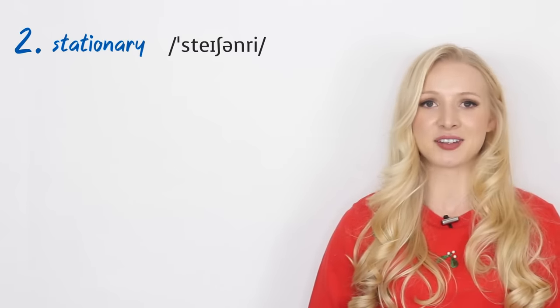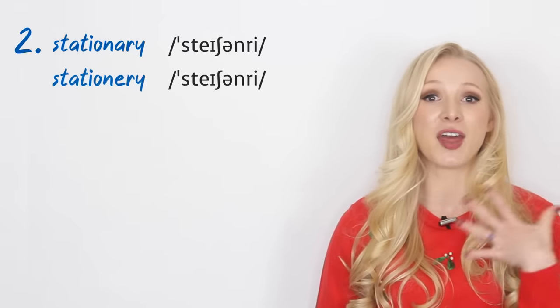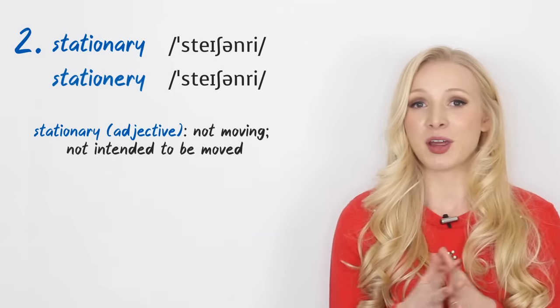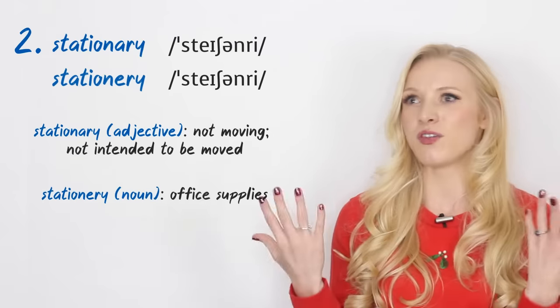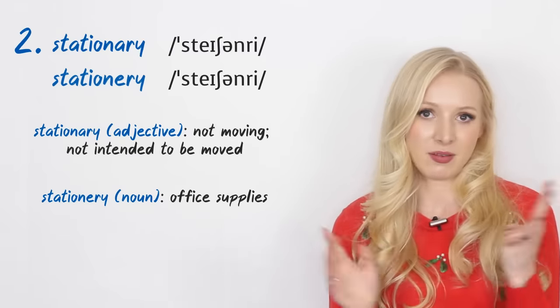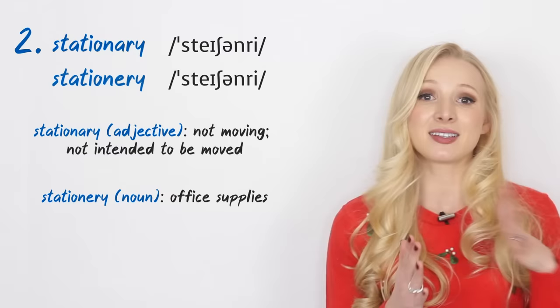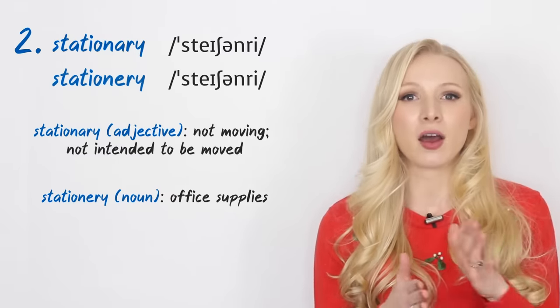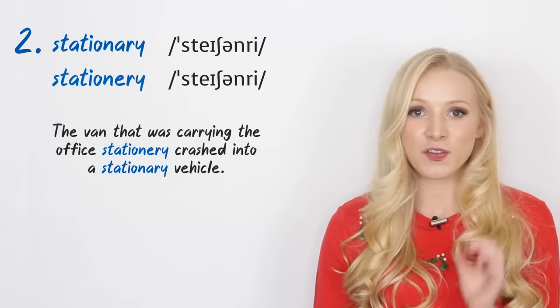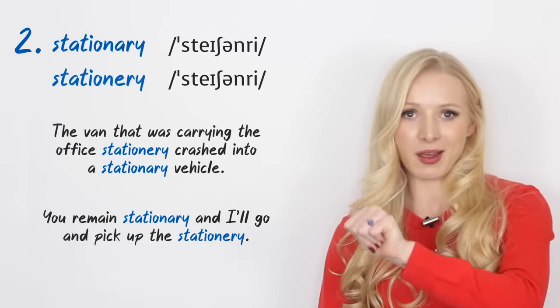Number two, we have stationary and stationary, both pronounced in the same way, but spelt differently. We have stationary with A-R-Y, which means to not be moving or not intended to be moved. And we have stationary with E-R-Y, which means office supplies - basically files, pencils, envelopes, paper - uncountable noun. Have a look at these sentences. When you hear them, you can only tell the difference through context because stationary E-R-Y is a noun and stationary A-R-Y is an adjective. When you see them written down, it's more clear. The van that was carrying the office stationary crashed into a stationary vehicle. Or you remain stationary and I'll go and pick up the stationary.